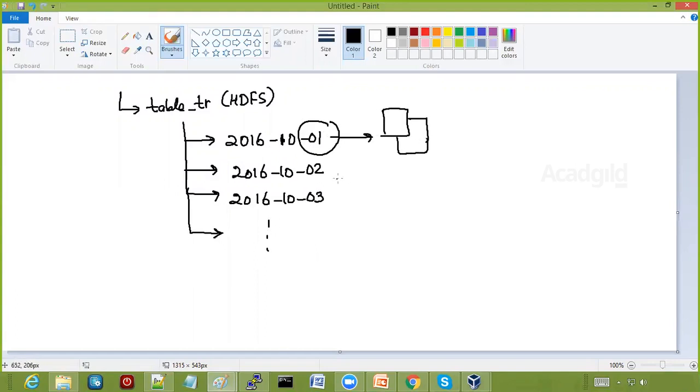All those transactions which happened on second of October will go inside this directory in the form of files. Similarly, now if we have to get the total of purchase for first of October, then we need not scan through all the directories. No. Just scan the files which are present inside this directory. Just scan this directory. So you will get lots of performance benefit if you see on a longer run.